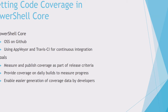Our goals with code coverage were to actually measure and publish the coverage as part of the release criteria. When we started the Open PowerShell project, we had essentially no tests — or not very many of them. If you were to look at how much of the product we were actually testing, it was probably less than 10% initially.